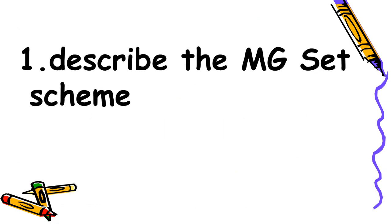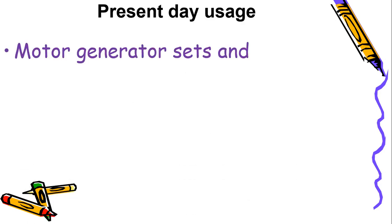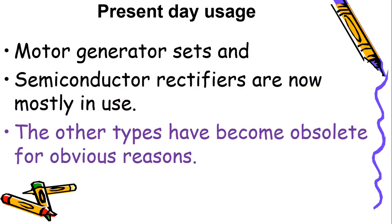We will be discussing the scheme of the MG set and explaining its working. In present-day usage, motor generator sets may still be there, but semiconductor rectifiers are widely used. The other types we mentioned are no longer being used or have become obsolete because of technological advancement.